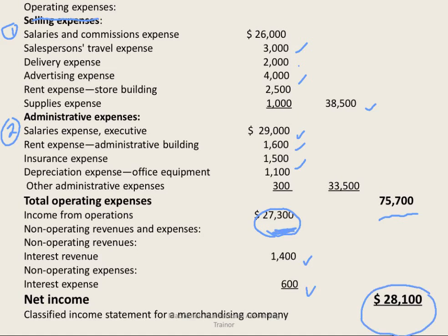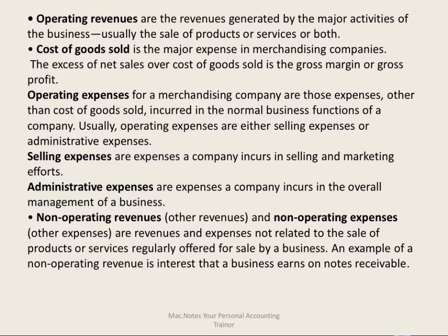Some new terms: operating revenues are revenues generated by the major activities of the business — the sale of products or services. Cost of goods sold is the major expense in a merchandise company. The excess of net sales over cost of goods sold is called gross margin, or gross profit. Operating expenses for a merchandise company are expenses other than cost of goods sold incurred in normal business functions — rent, salaries — broken into selling expenses and administrative expenses. There is also a section for non-operating expenses.